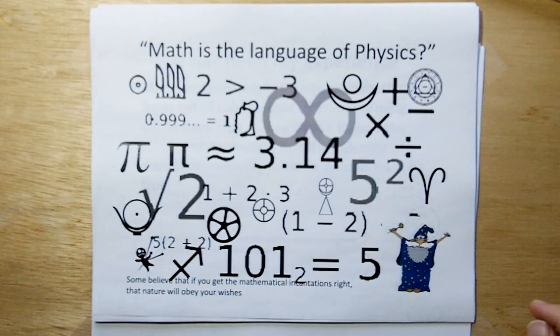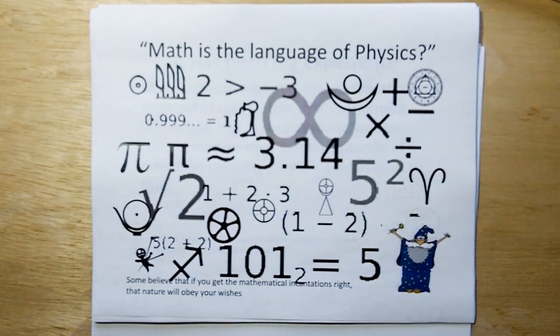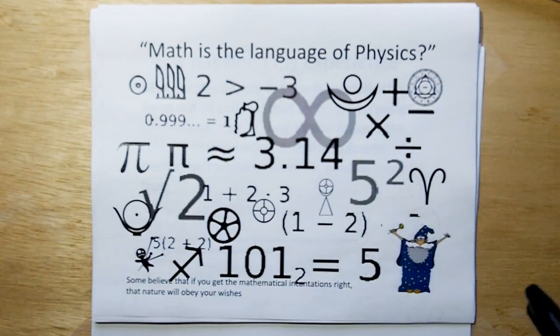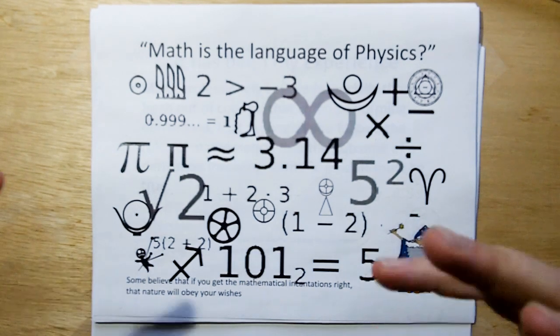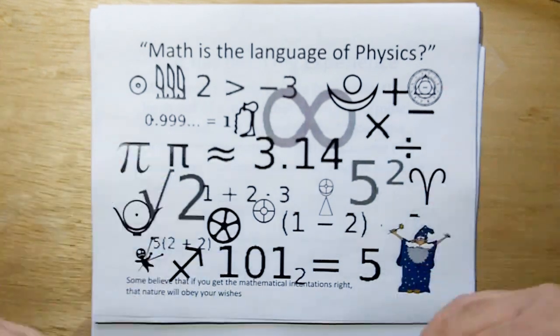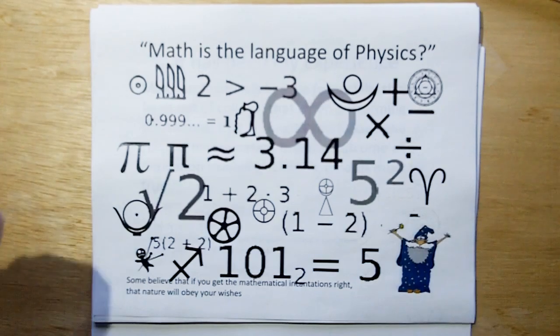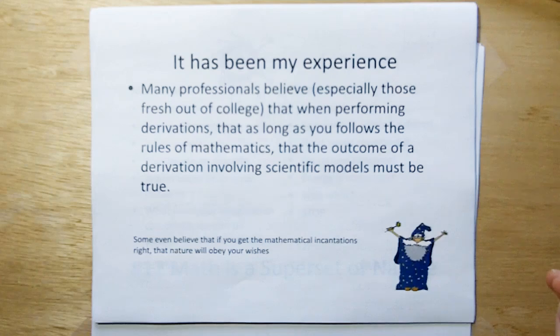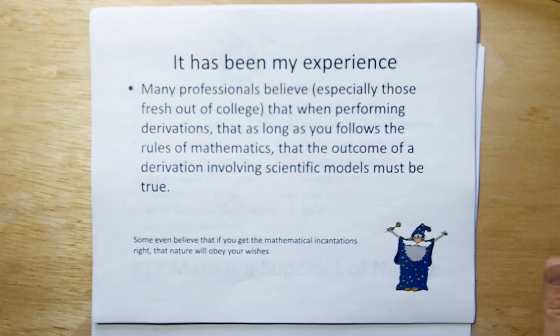I've heard a lot of people, especially physicists on mainstream news, say that math is the language of physics. And there's a lot of people, especially coming out of college, that almost feel like they've been taught some alchemy language, where if they just get the mathematical incantations right, then nature will obey your wishes, just like Harry Potter. And there's also those that believe that as long as you follow the mathematical rules, that the outcome of a derivation involving scientific models must therefore be true.